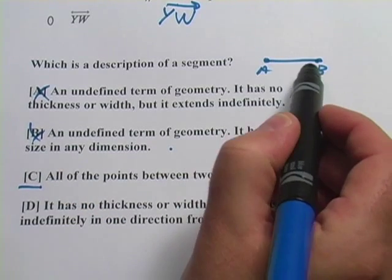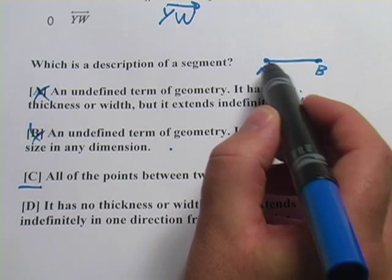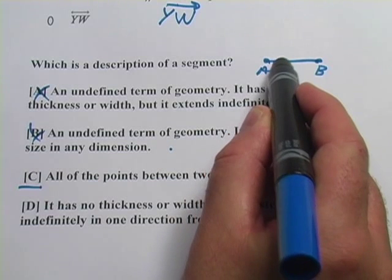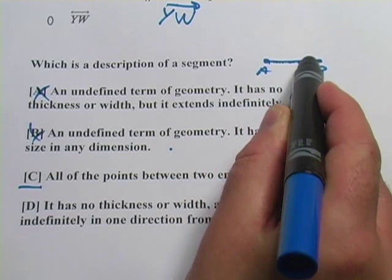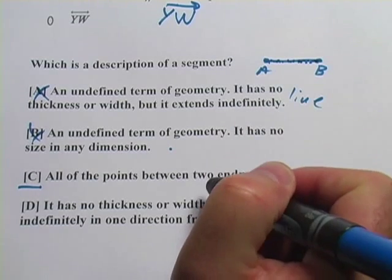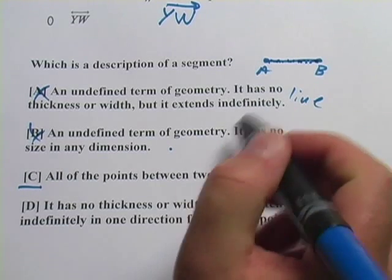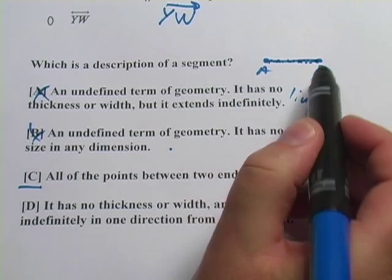And if you think about this line segment, it's really, or a line for that matter, it's made up of an infinite number of points all lined up together. So a good definition for a line segment is all of the points that are between two endpoints.